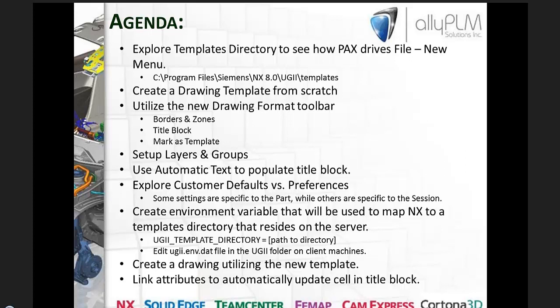I want to make sure all my part preferences are set up in my template file so that any files created from it will mimic that template. Then I'm going to show you how to create an environment variable that will be used to map NX to a templates directory that resides on the server. If you're a CAD administrator setting up templates and PAX files, you want that templates directory on the server with client machines pointing to it. Once our template is created, we'll create a new drawing utilizing that template.